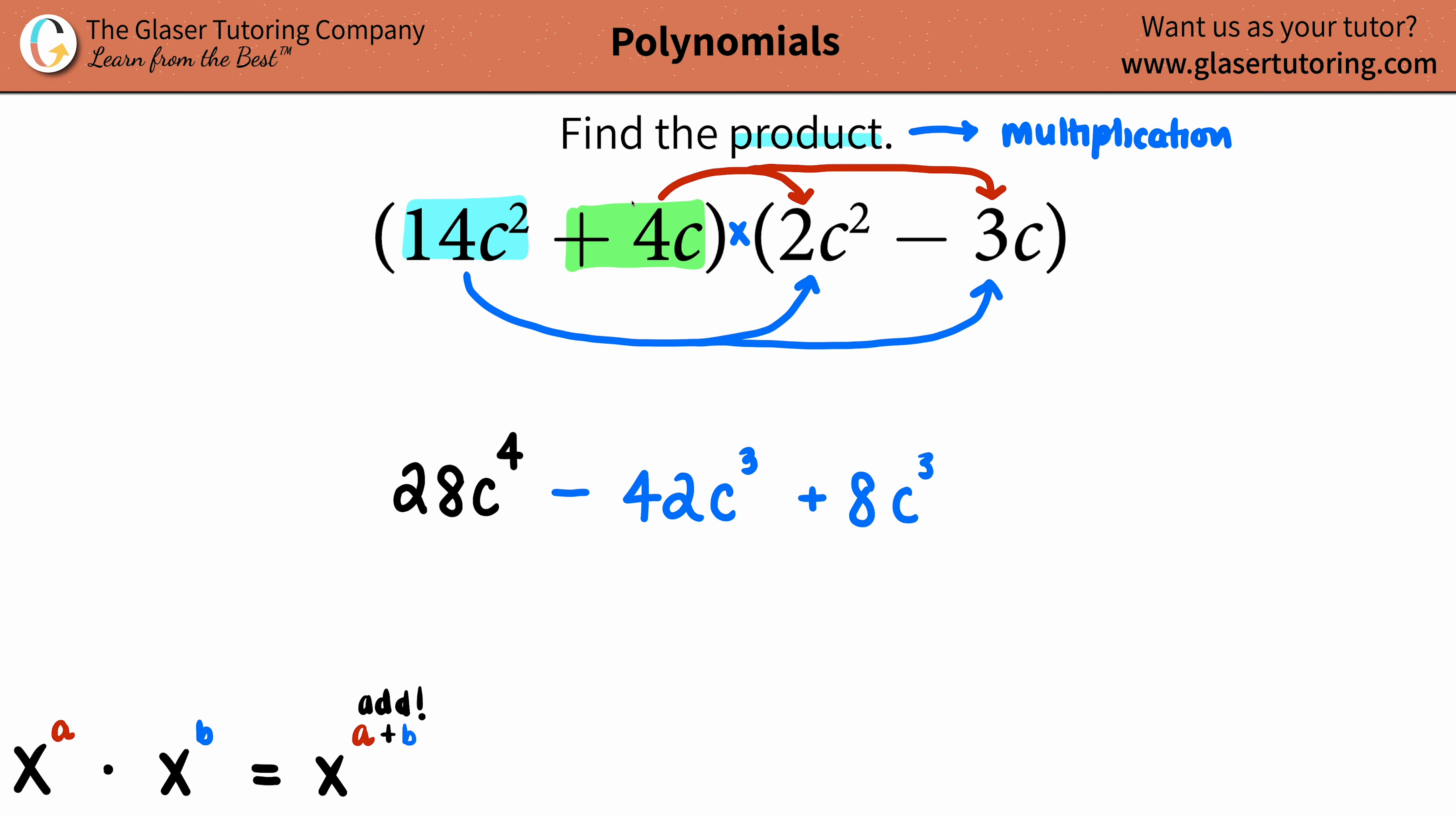So we got 4c. 4 times a negative 3 is a negative 12. And then do your variables. I have c times c, one c, c to the first, c to the first. 1 + 1 is 2, so c².